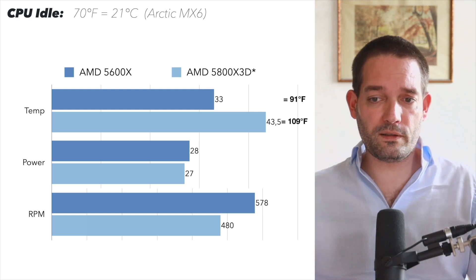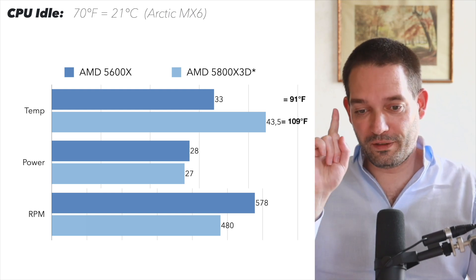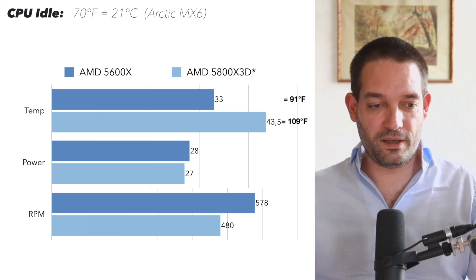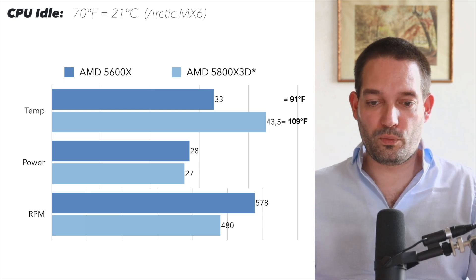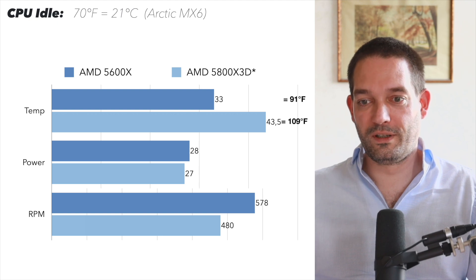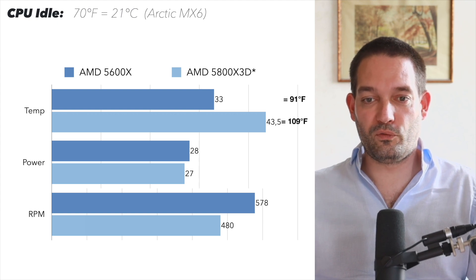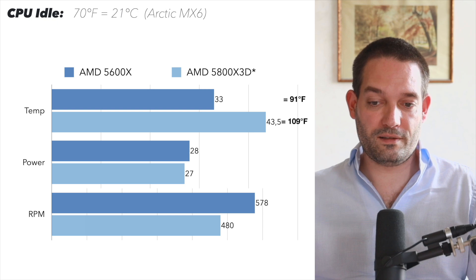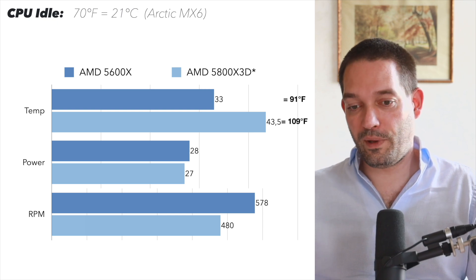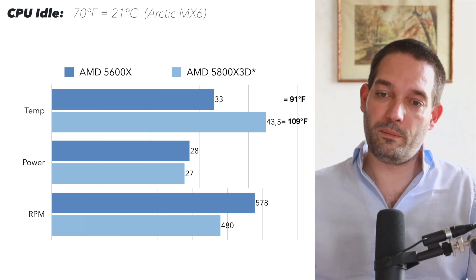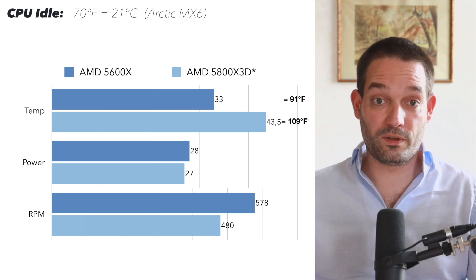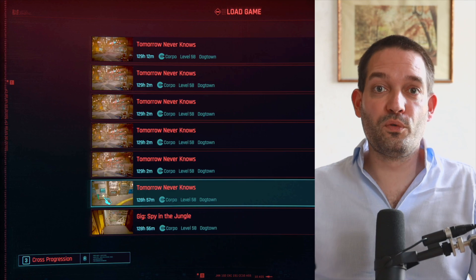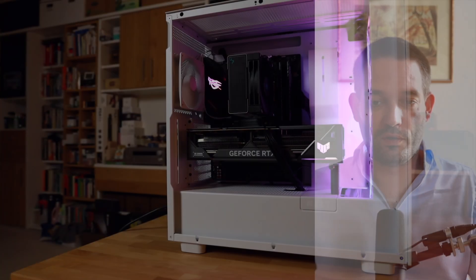I did make one small test mistake with the X3D: I didn't calibrate the fan curve after switching the fans, which is why the RPMs are so low in that case. If I had done the calibration, RPMs would have been slightly higher and it would have run a little cooler. That was the one mistake I made here. But since we already know desktop use is no problem, let's move on to a load test.